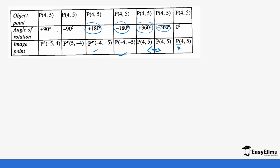The key difference comes with positive 90° and negative 90°. An inversion happens: point P was (4, 5) and it becomes (5, 4) — the coordinates swap. For a positive (anti-clockwise) 90° rotation, the x-value turns negative. For a clockwise (negative 90°) rotation, the y-value is the one that gets a negative sign.